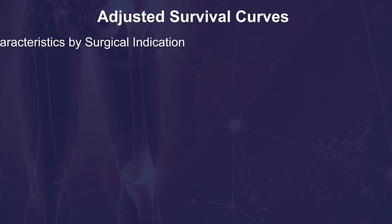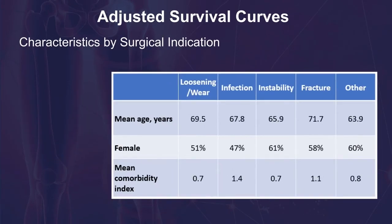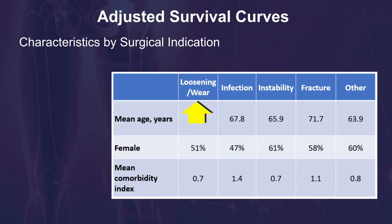We will now go through an example to illustrate how adjusted survival curves can graphically add to the comparison of absolute mortality risk differences in revision total knee arthroplasty patients. We will compare the survival across five different surgical indications: infection, fracture, instability, loosening or wearing, and other.